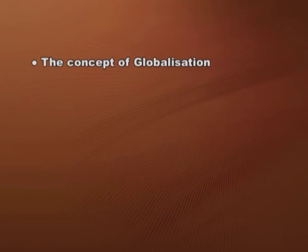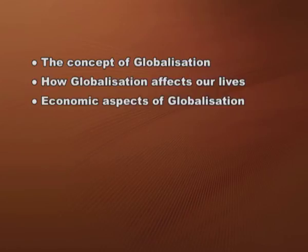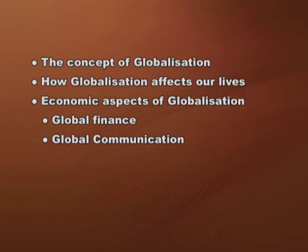As you know, we have already started discussing this chapter. This chapter is divided into four parts. So far, we have discussed about the concept of globalization, that is what are the main features of globalization, how globalization affects our lives taking examples from Indian society. We have discussed about economic aspects of globalization which includes global finance, global accommodation and international division of labor.